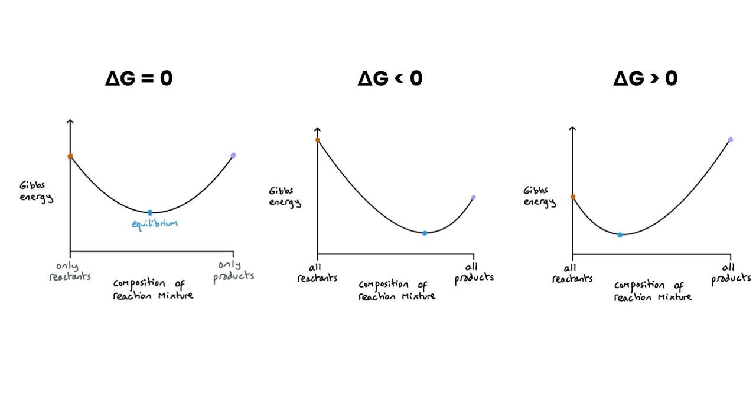Now there are some variations to this graph and it depends on the delta G value for the forward reaction. If we have a reaction where the delta G is equal to zero for the forward reaction, then we get the equilibrium happening at the halfway point here, so forward reaction and reverse reaction are essentially equivalent to each other.